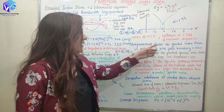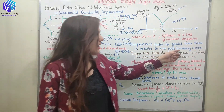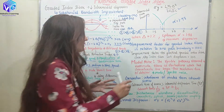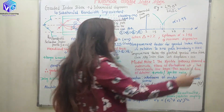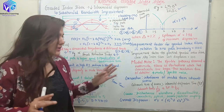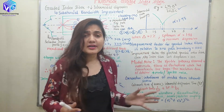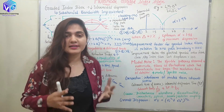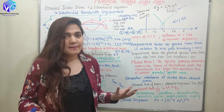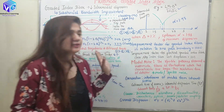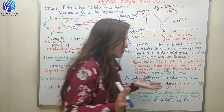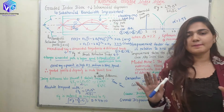The improvement factor for the graded index fiber in relation to RMS pulse broadening is 1000 theoretically. But considering all practical conditions, the improvement factor for the practical graded index fiber over the step index fiber is 100. So graded index fiber is practically 100 times more improved than the multi-mode step index fiber. I hope you understood the various concepts of the multi-mode graded index fiber and how it is improved over the step index fiber.